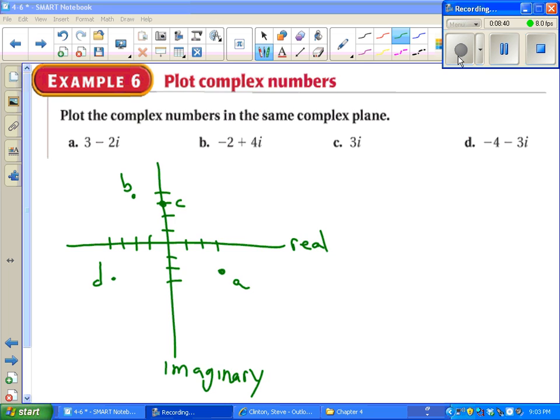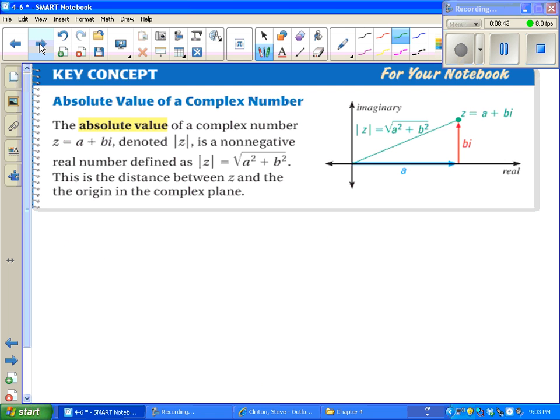One more topic today. Absolute value of a complex number. The way we find absolute value, we remember that absolute value means distance. And we plot the point, just like we did in the last example. And then we can use Pythagorean theorem to figure out how far that is from the origin. Because absolute value always means how far are we from the origin. We don't have to actually plot the point and graph it, though. We can use the formula. I do expect you to memorize the formula. It's really just Pythagorean theorem. Square root of a squared plus b squared. Where a is the real part, and b is the imaginary part.